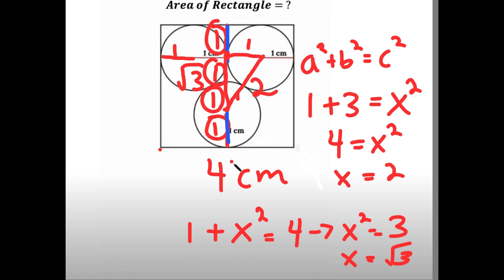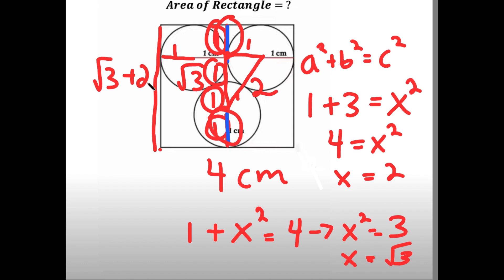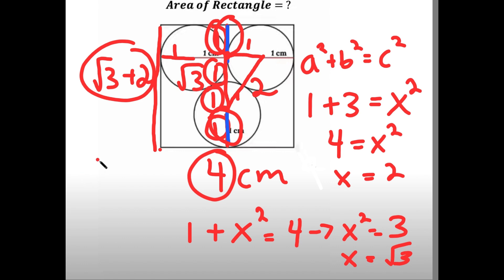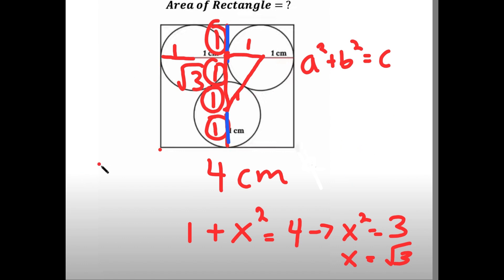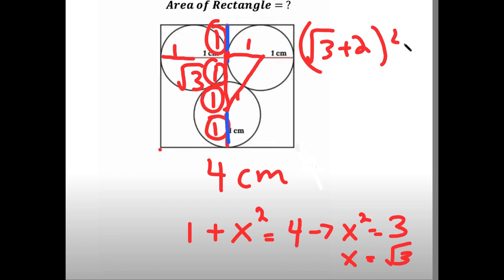Now knowing all of this, the total width of the rectangle is the square root of three plus two — that's the horizontal span. All that's left is to multiply the two sides: the square root of three plus two, times four, equals four root three plus eight centimeters squared. This is the area of the rectangle.